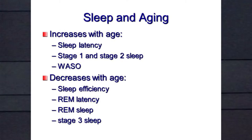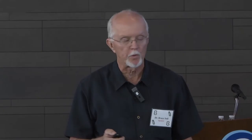What happens to sleep with aging? Sleep latency increases — it takes a little longer to fall asleep. Stage one and two sleep increase, while stage three sleep decreases, so your sleep is lighter. Time awake after sleep onset increases. Sleep efficiency is no longer 95%. Latency to REM sleep and the amount of REM sleep both decrease, and stage three sleep decreases as well.